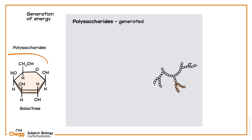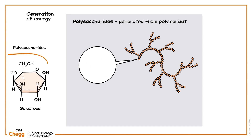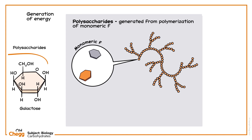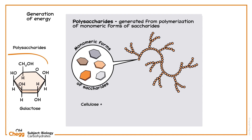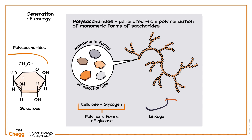Polysaccharides are generated from the polymerization of monomeric forms of saccharides. Cellulose and glycogen are two polymeric forms of glucose, and their properties vary due to the differing types of linkage between the monomeric units.